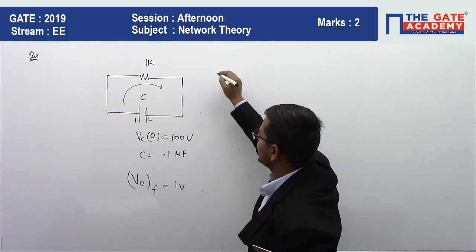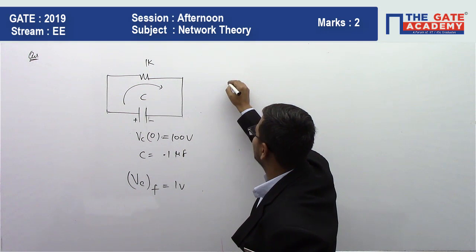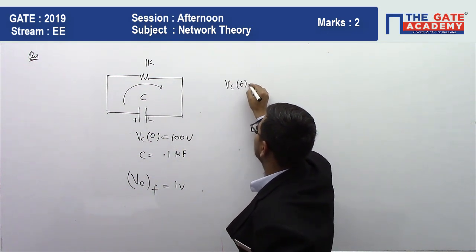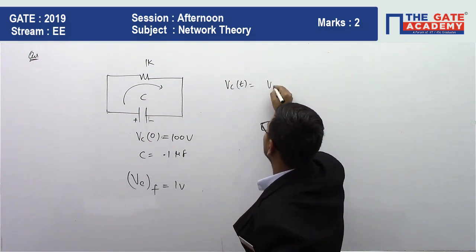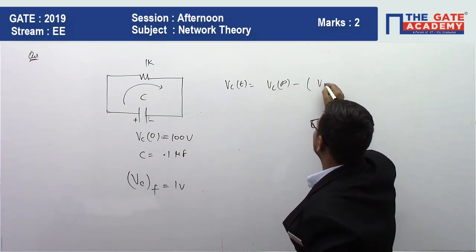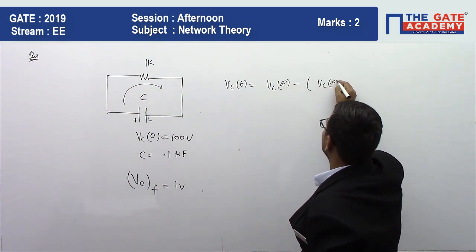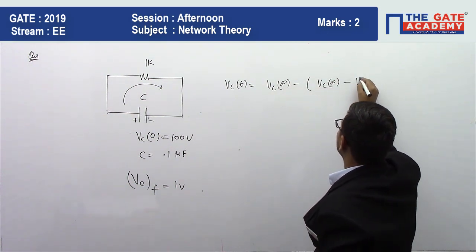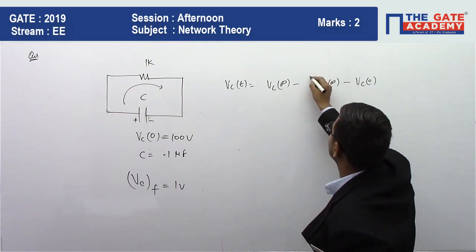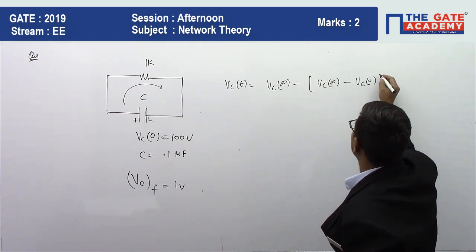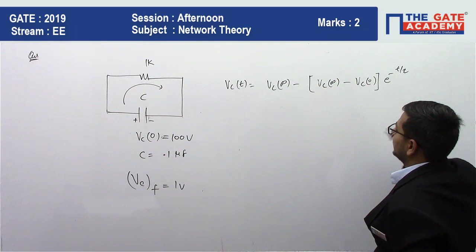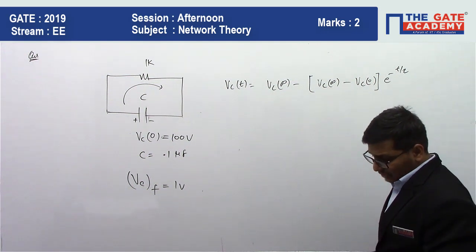We know the standard formula: VC at time t equals VC(∞) minus [VC(∞) minus VC(0)] times e to the power minus t by tau.